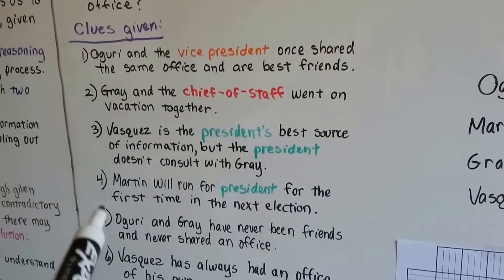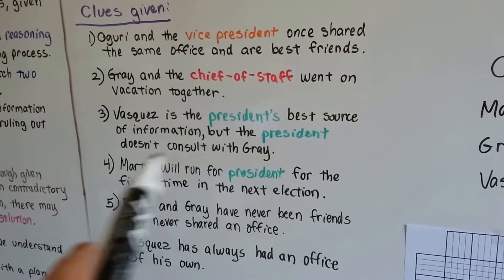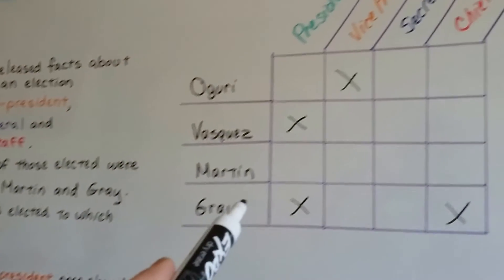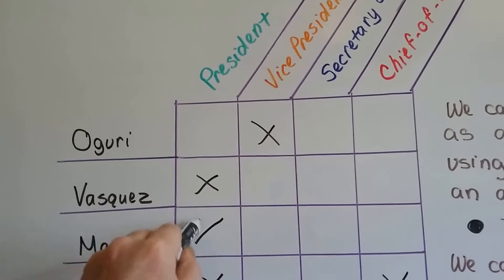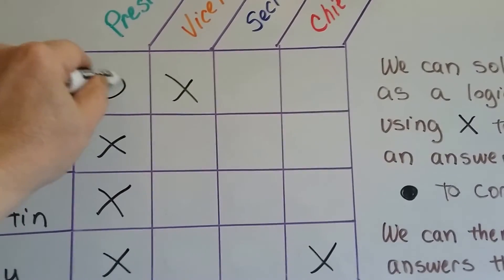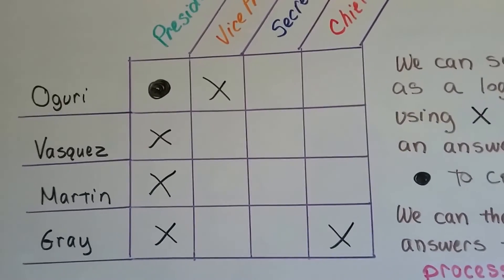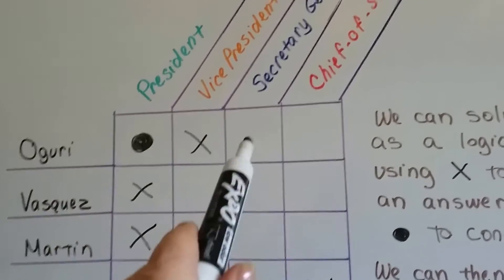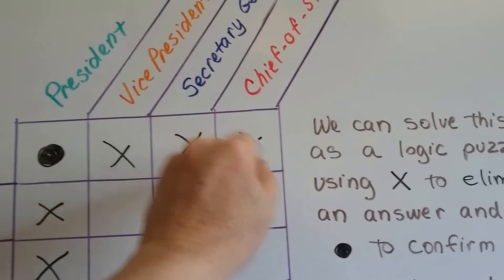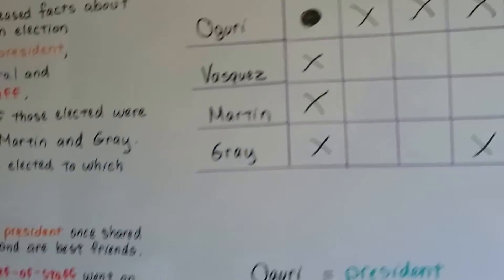The next clue says Martin will run for President for the first time in the next election, so Martin can't currently be President. We put an X for Martin under President. And do you see what's happening through process of elimination? Who's the President? It's got to be Oguri! So we put a dot there — Oguri is the President. If he's the President, then he's not the Secretary General, so we put an X there, and he's not the Chief of Staff, so we put an X there too.